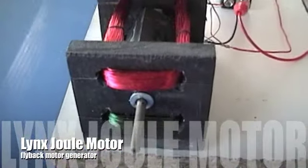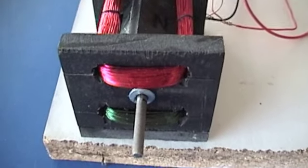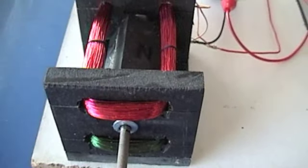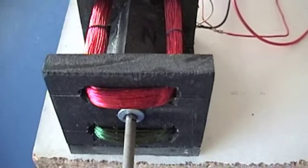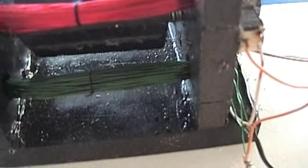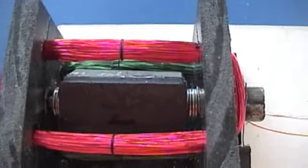This is a Lynx joule motor. The reason I'm calling it a joule motor is it acts a little bit like a joule thief in that we're using the flyback in the circuit. So the green coil is the drive coil and when that one's finished firing, the transistor which is right there sends a high voltage surge through that red coil on top.